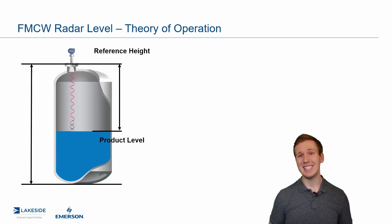If we look at an FMCW, or Frequency Modulated Continuous Wave non-contacting radar, the differences are immediately clear. As you can see, it seems to be shooting and receiving waves at the same time. That's exactly what it does.